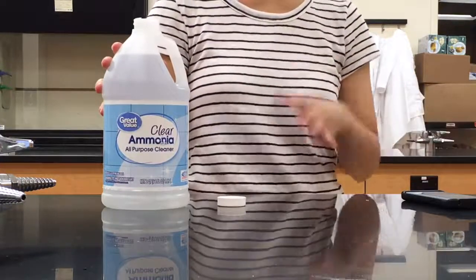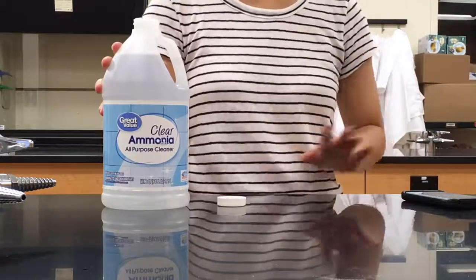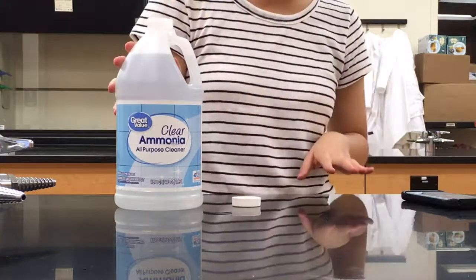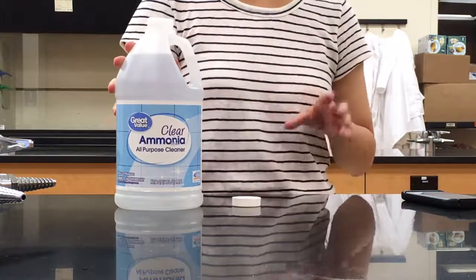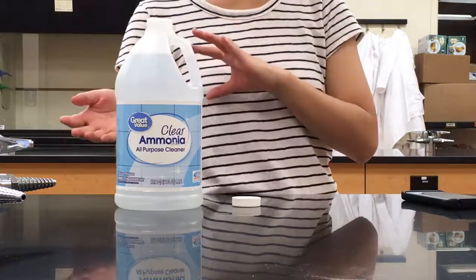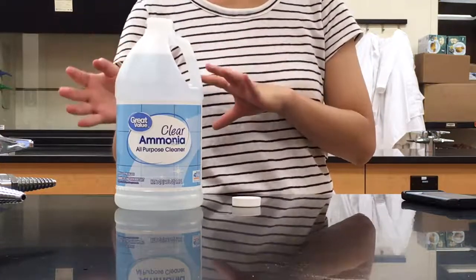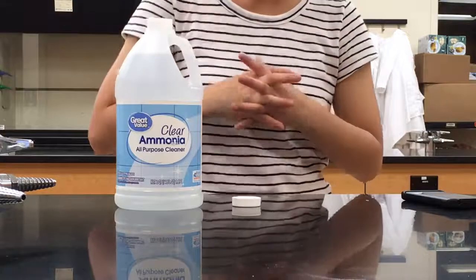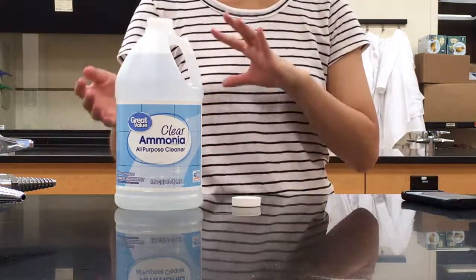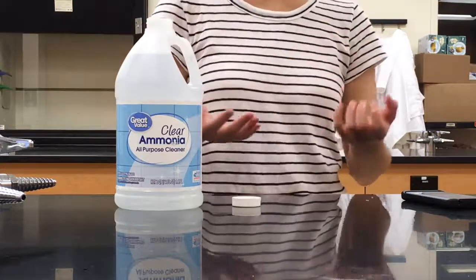So this happens because the particles of ammonia are always moving. This is a process called diffusion, and it's from a high concentration to a low concentration. And we call that a concentration gradient. So the particles of ammonia are moving down the concentration gradient, which is why you can smell it from a distance.